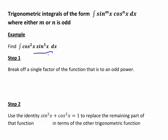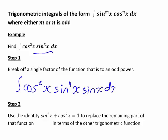The first step is to break off a single factor of the trig function that is to an odd power. In this case that means that we'll be rewriting the sine to the power of 5x part as sine to the power of 4x times sine x, and we're working out that integral with respect to x.